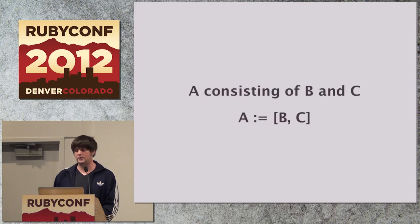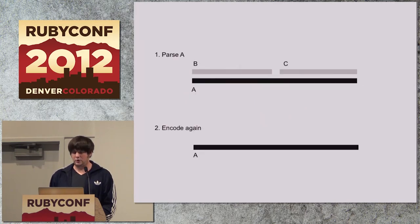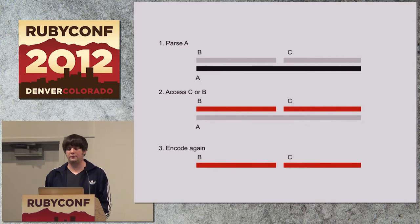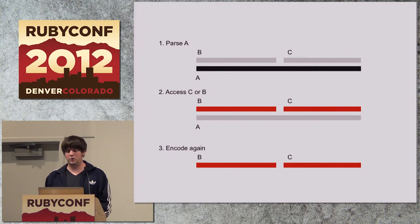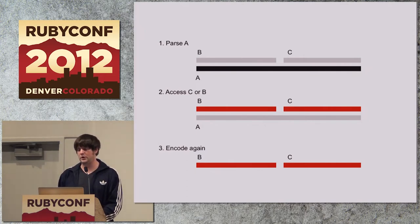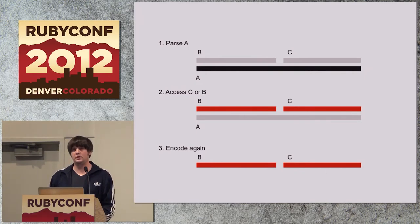The only way to deal with this is to cache the original encoding. Let's consider a very simple data structure A that consists of two elements, B and C. If you just parse the data and re-encode it right away, it will just cache the entire encoding and dump it out again. Only if you start accessing the fields will we start to interpret the inner encodings. Once we access C or B, we interpret their encodings and can discard the outer encoding — since the outer encoding just consists of the encodings of B and C. Then when we write it out again, we simply write out the cached encodings of B and C.